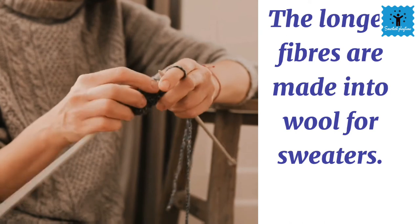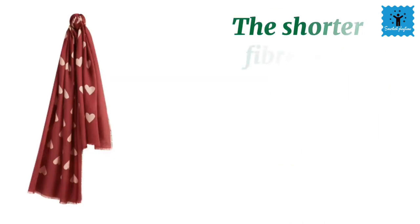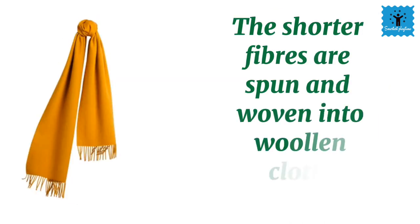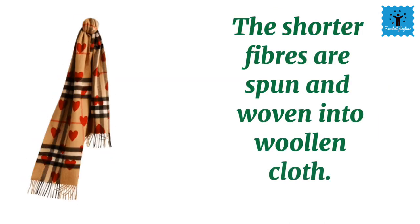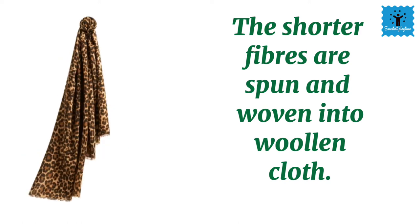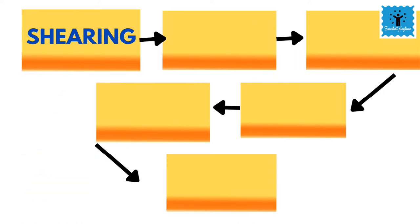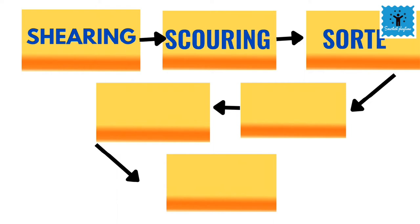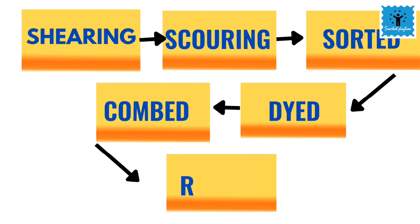Long fibers are thick and made into wool for knitting sweaters, while the short fibers are fine and used to make woolen clothes. Finally, we can conclude that sheep's hair is sheared off from the body, scoured, sorted, dyed, combed, and rolled into wool.